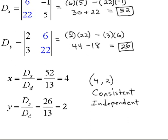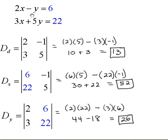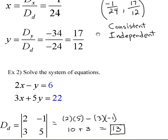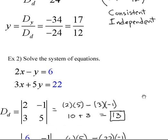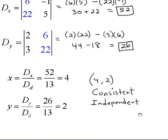You might argue that this particular system could have been solved more easily using substitution. But I'd refer you back to our first example — there we dealt with a fraction like negative 1/24. If you recall graphing, how can you tell when two lines intersect at negative 1/24 versus negative 1/25? With Cramer's Rule, the nice advantage is that the only thing we do with a fraction is reduce it at the very end, which is much easier than working with that fraction all the way through the system.